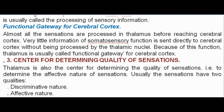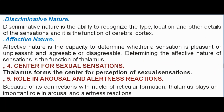Functional gateway for cerebral cortex: almost all sensations are processed in thalamus before reaching cerebral cortex. Very little somatosensory information is sent directly to cerebral cortex without being processed by thalamic nuclei; because of this, thalamus is called the functional gateway for cerebral cortex. Third, center for determining quality of sensations: thalamus determines the effective nature of sensations. Sensations have two qualities — discriminative nature, which is the ability to recognize type, location, and other details of sensations (a function of cerebral cortex) — and effective nature, which is the capacity to determine whether a sensation is pleasant or unpleasant, agreeable or disagreeable (a function of thalamus).